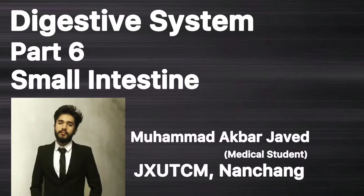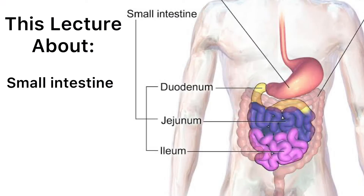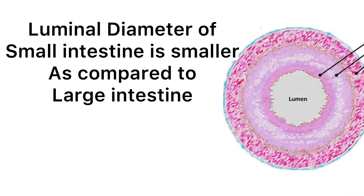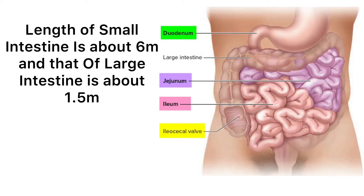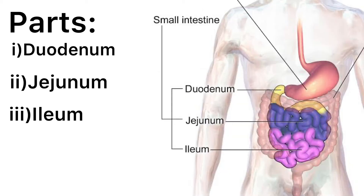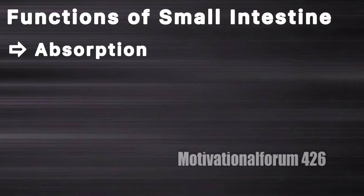Digestive system part 6. In this lecture we will talk about the small intestine. The small intestine has less luminal diameter as compared to the large intestine, so the name is small intestine — but the small intestine is larger in length than the large intestine. It has three parts: number one, duodenum; number two, jejunum; number three, ileum.